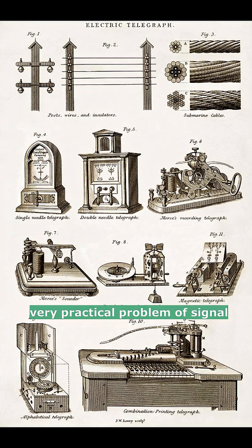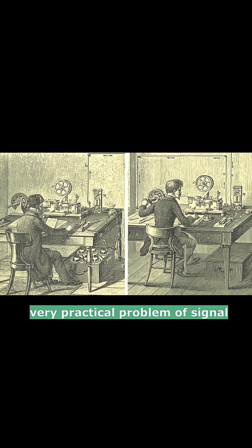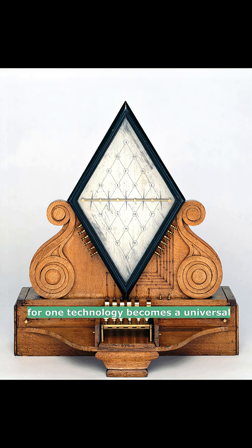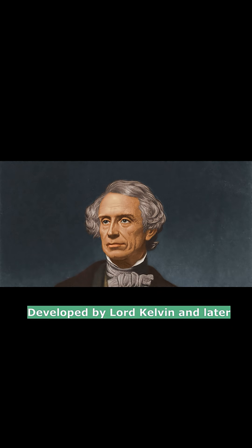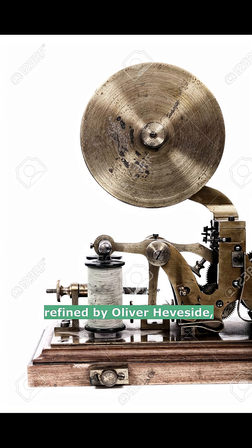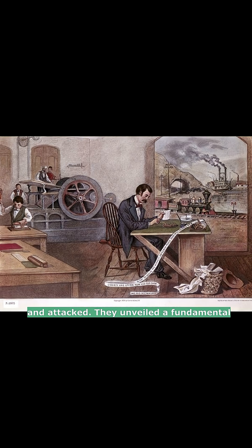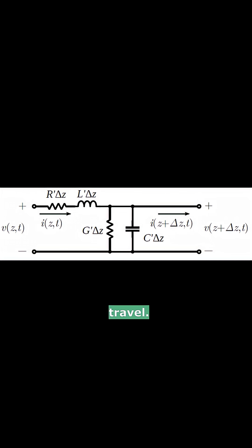Born in the 19th century to solve the very practical problem of signal distortion on long-distance telegraph lines, the telegraph equations are a stunning example of how a solution for one technology becomes a universal key for understanding our world. Developed by Lord Kelvin and later refined by Oliver Heaviside, these equations didn't just ensure that a Morse code message from London could arrive in New York intact — they unveiled a fundamental truth about how information and energy travel.